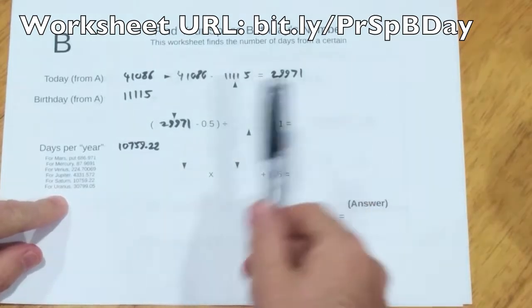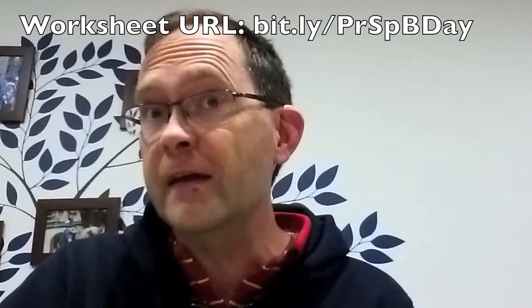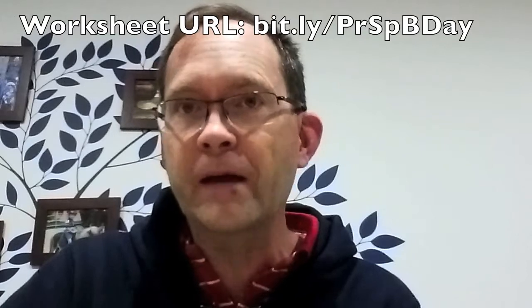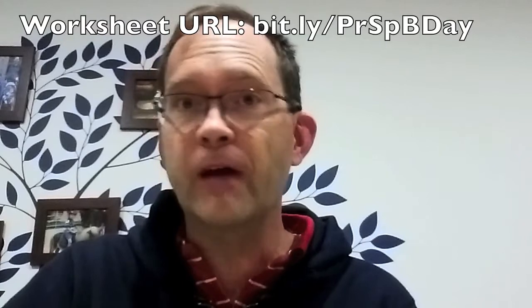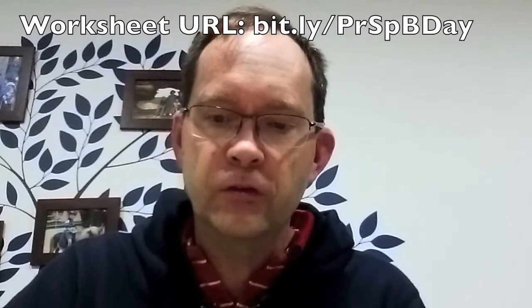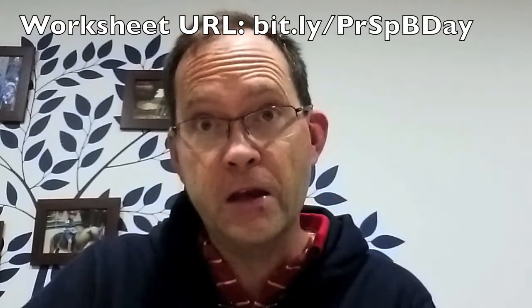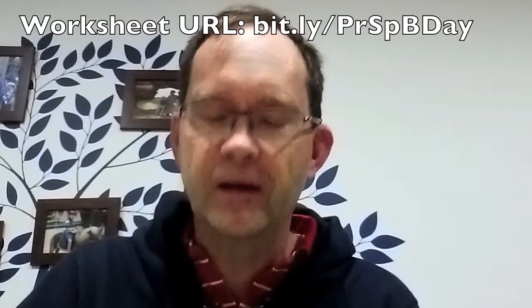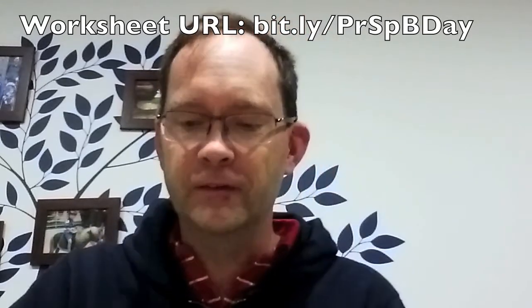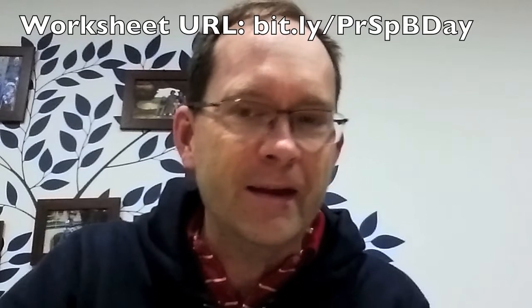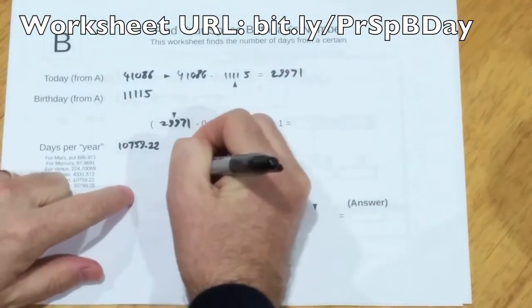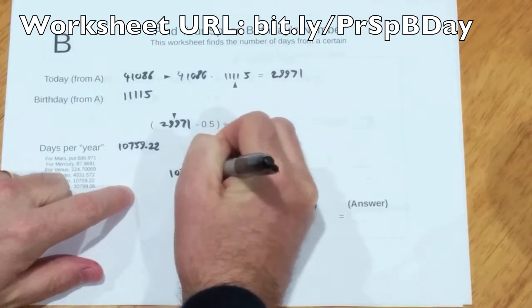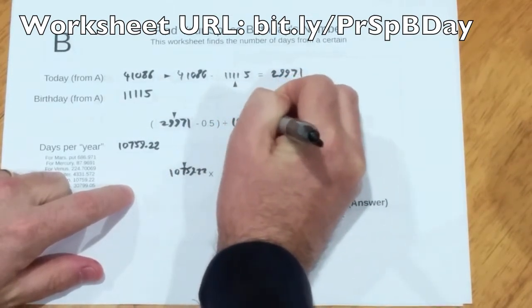You'll notice I don't have the planet Neptune. That's because these worksheets only work for dates between 1901 and 2099, and one Neptune year is 165 years. It's just not going to work. And let's not even talk about Pluto. It's not even a planet. So we copy this number here, 10759.22.